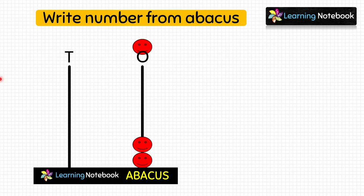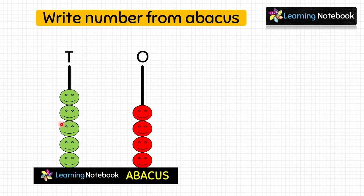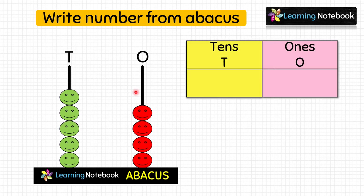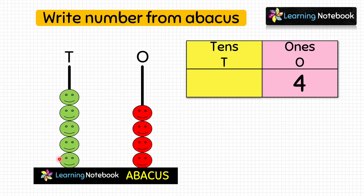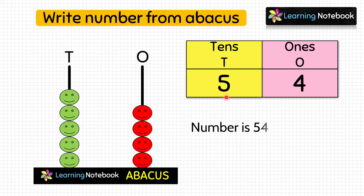This is an abacus and we have to write the number being shown by it. First we will count the number of beads at the ones place — these red beads: 1, 2, 3, 4. So write 4 at the ones place. Next, count the beads at the tens place — these green beads: 1, 2, 3, 4, 5. So write 5 at the tens place. We have got the number 54.